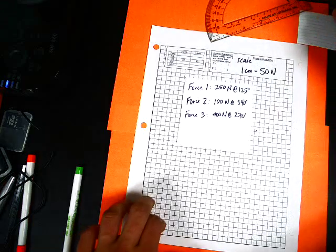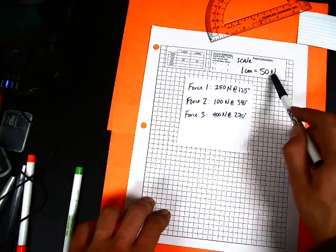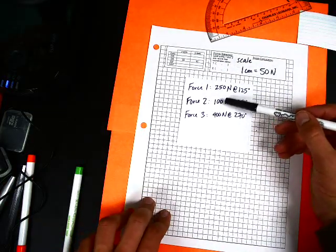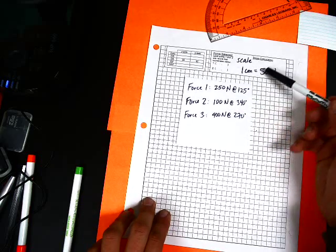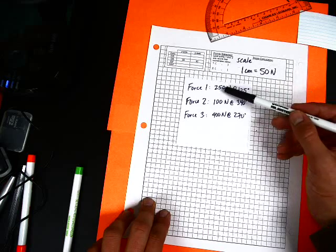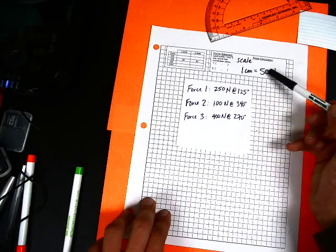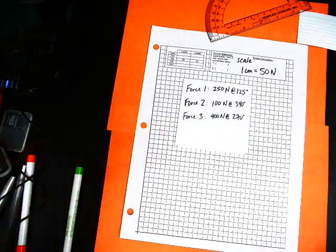For this one, I chose the scale of one centimeter equals 50 Newtons. If you notice, they're all divisible by 50. This one will be 2 because 50 times 2 is 100, 50 times 5 is 250, and 50 times 8 is 400. So those are good sized vectors.